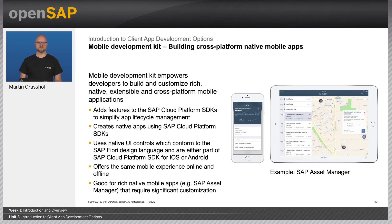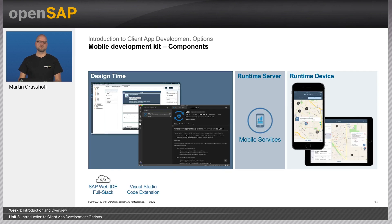Another option to build mobile applications is our so-called Mobile Development Kit. The Mobile Development Kit helps you to create cross-platform applications that you define once, and then you can use them natively on Android and iOS at the same time. The Mobile Development Kit basically consists of three parts: the design time, the runtime — which in this case is mobile services itself — and a runtime player on the device, which executes your application and brings it to your users.